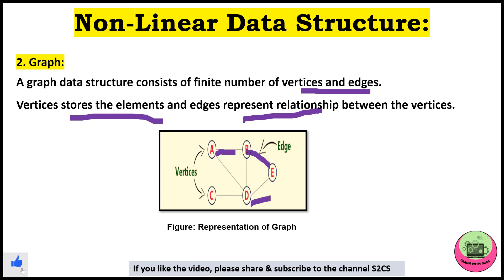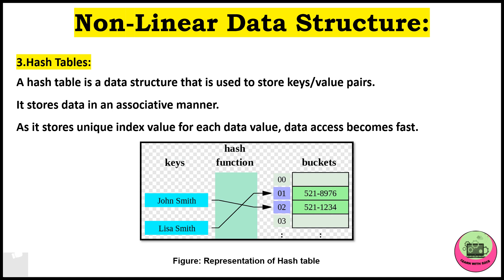The last one, hash tables. Hash table is used to store key or value pairs. It stores data in associative manner. It stores unique index value for each data value. Data access becomes fast. See here in the figure, how the data value corresponds to the particular index so that the access becomes easy.